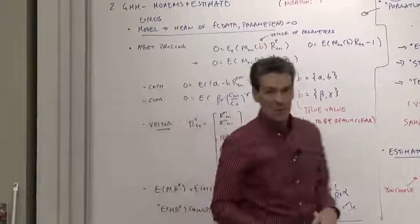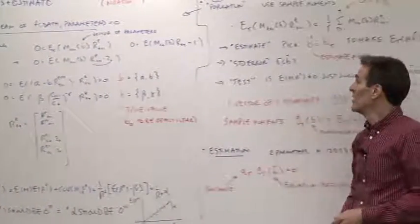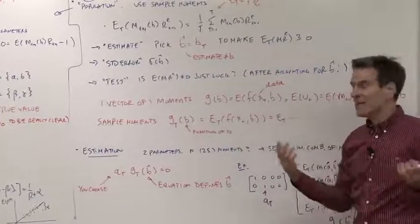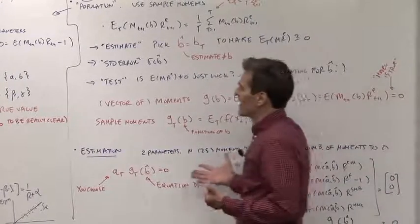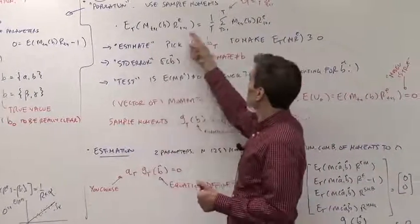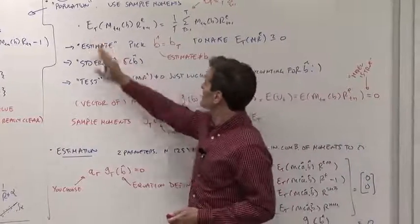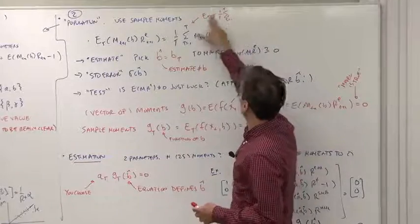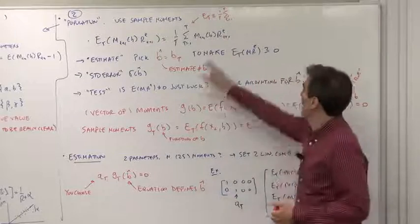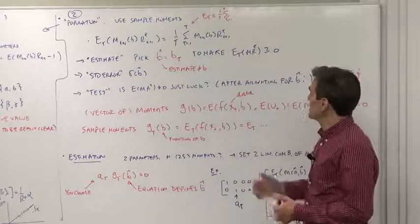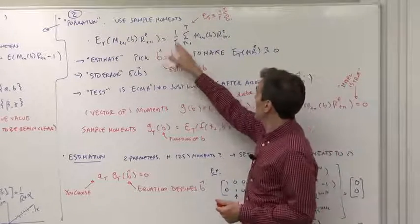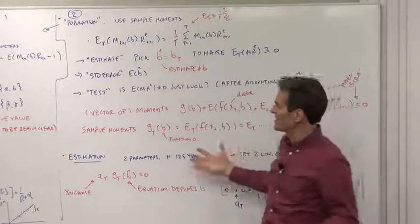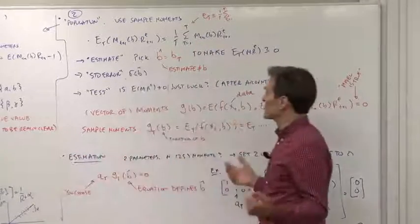So step one, express your model as a vector of moments that should all be zero. Now those are population moments. These are statements about truth. We have a sample. So the GMM philosophy says, how do we estimate population moments? We'll just use the sample counterparts.